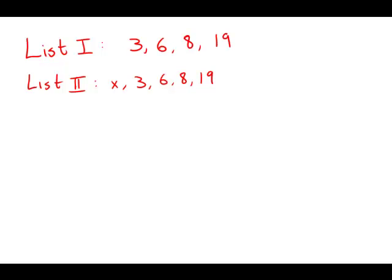If the median of the number in list number 1 is equal to the median of the numbers in list number 2, what is the value of x? So first of all, remember that the median is the middle of a list when the list is put in numerical order.